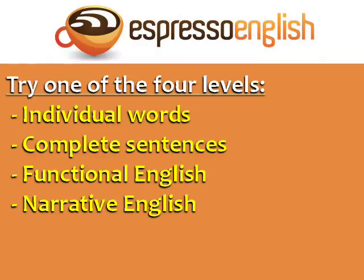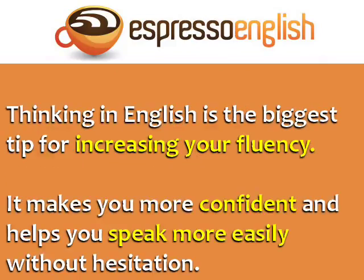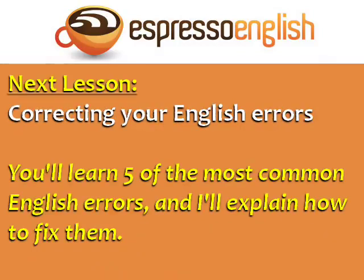You don't need to be super advanced to learn to think in English — you can start today. Try one of the four levels this week: thinking in individual words, complete sentences, functional English, or narrative English. Thinking in English is the biggest tip for increasing your fluency because it makes you more confident and helps you speak more easily without hesitation. The next lesson is about correcting your English errors — you'll learn five of the most common English errors and how to fix them.